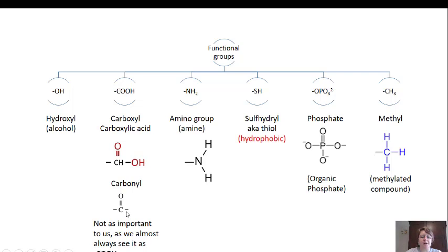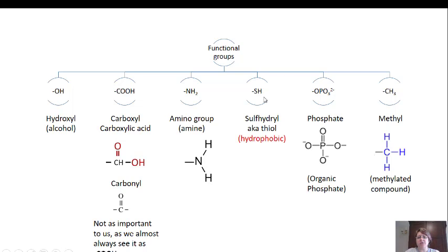You also have a carbonyl. We don't focus on carbonyls as much, although you see them a lot in sugars — we mostly see them as carboxyl groups. The next group is an amine or amino group, which is a nitrogen bonded to two hydrogens. You can see it in line format or the exploded version. The next group is a sulfhydryl. Sometimes sulfhydryls are called thiols and they are hydrophobic — the only one of these six that is hydrophobic.